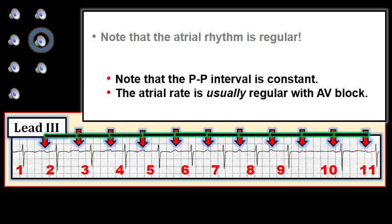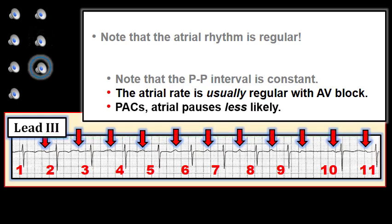One of the key points to remember about the ECG diagnosis of AV block is that the atrial rate should be regular, or at least fairly regular. There may be slight variation in the atrial rate due to underlying sinus arrhythmia or ventricular phasic sinus arrhythmia, but by and large with AV block there will be a regular atrial rate. When there are pauses but the atrial rate is not regular, then I think about things like PACs or blocked PACs, and/or sinus pauses or exit block common with sick sinus syndrome.